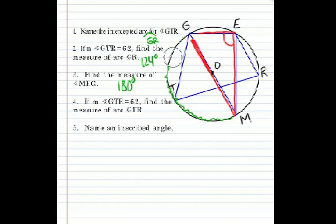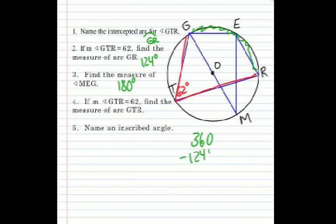Number four. If angle GTR is 62, let's mark that angle again, 62, inscribed angle, find the measure of arc GTR. Well, from the previous problem, we talked about how arc GR has to be 124. So the entire circle is 360 degrees, but we're going to take away 124 degrees from arc GR, and that will give us our answer. 236 degrees. That's the rest of the circle.